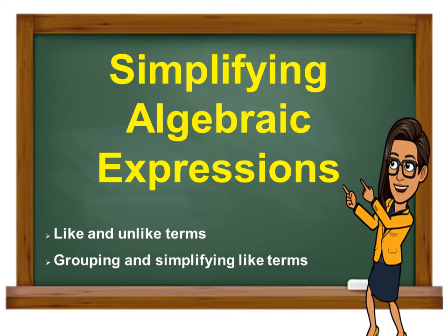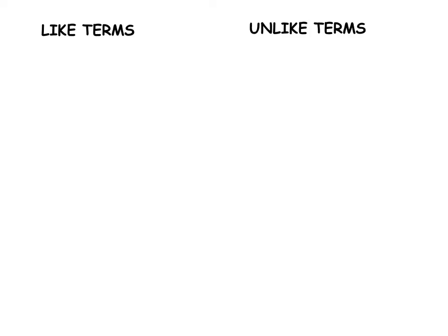We're going to be practicing grouping and simplifying like terms. So let's get right into it. Now you hear the terms like term and unlike terms, what are they? Like terms are terms that have the same variable while unlike terms have different variables.